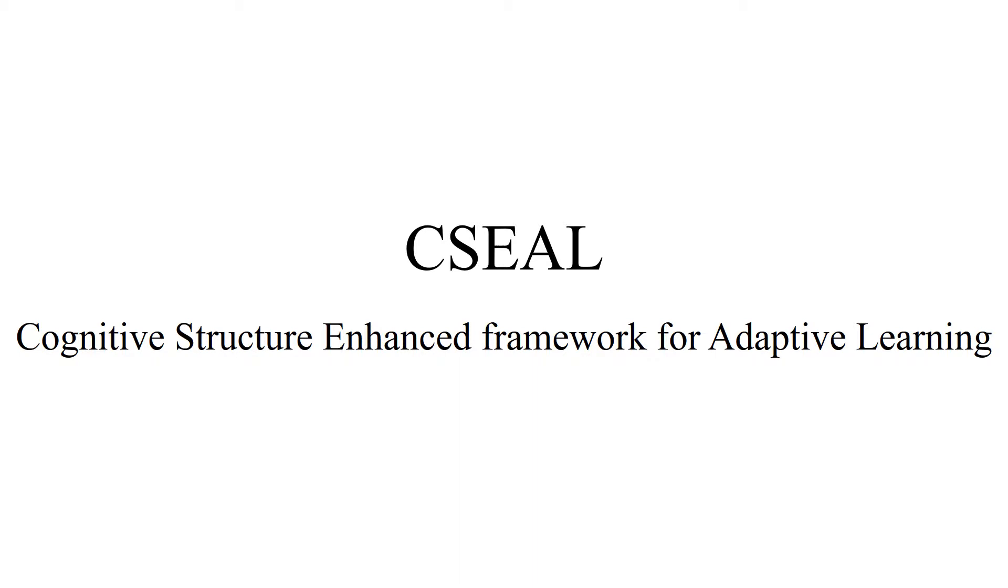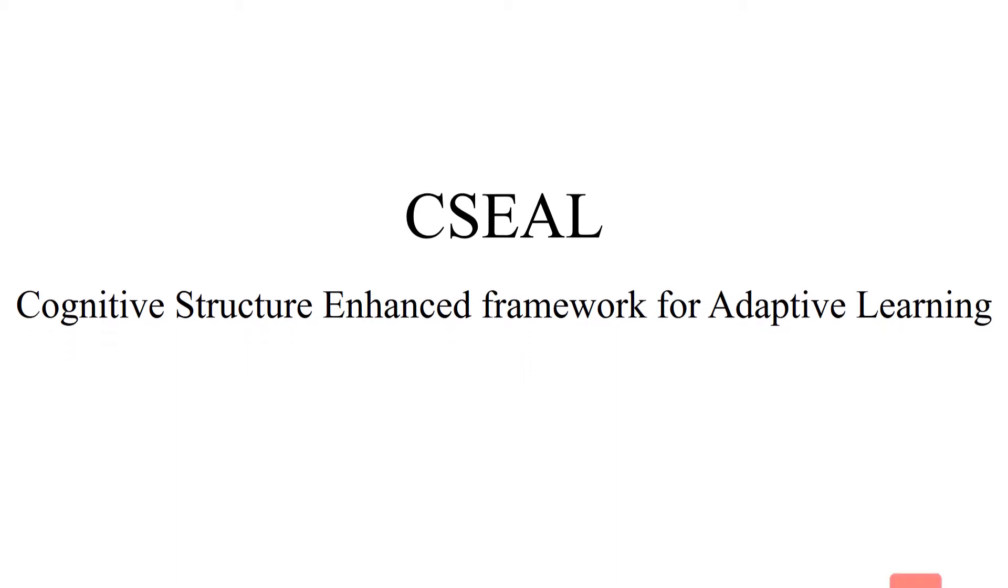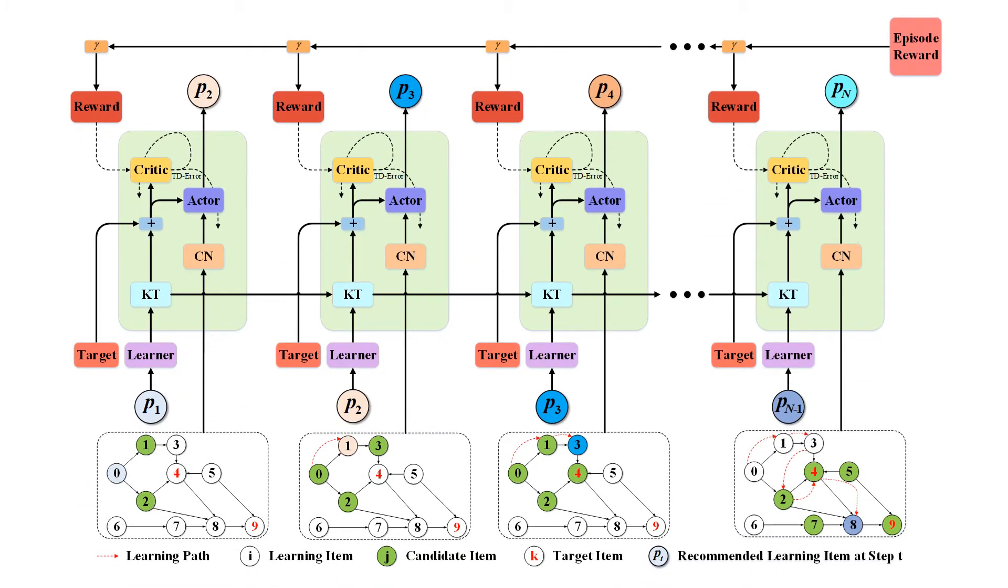To fully exploit the multifaceted cognitive structure for learning path recommendation, we propose a cognitive structure enhanced framework for adaptive learning named SEAL. To retrieve the evolving knowledge level, the knowledge tracing model based on long short-term memory LSTM network is first applied.